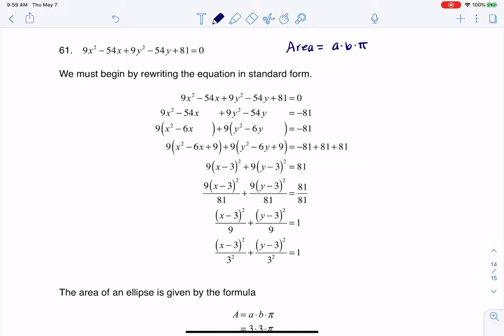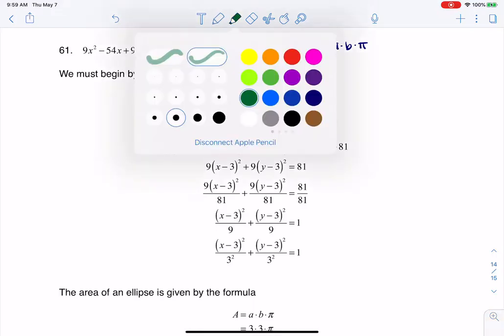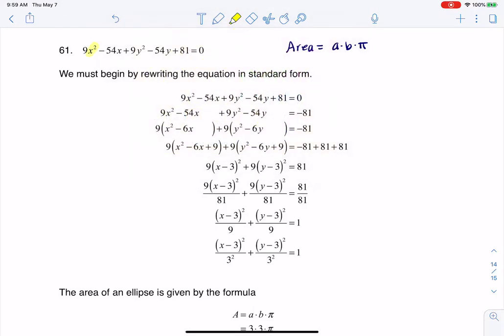If I look at this equation, I have an ellipse, and I'll actually tell you, technically I have a circle, and the reason I can say that is because I can see two squared terms, I see an x squared and a y squared.